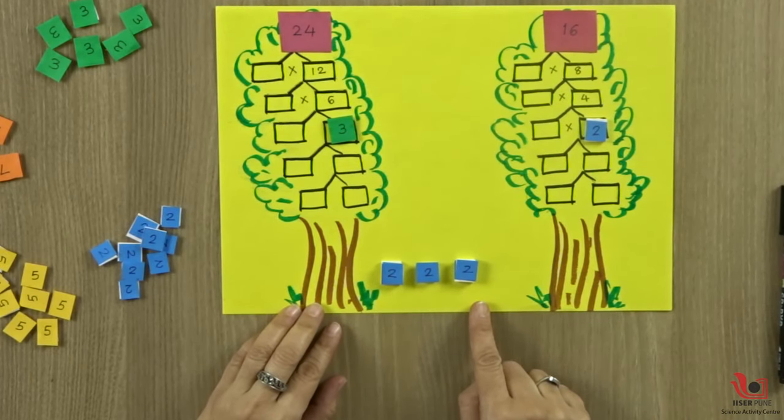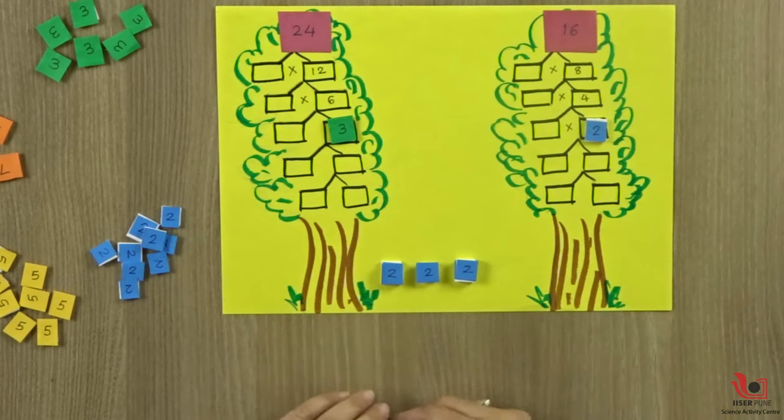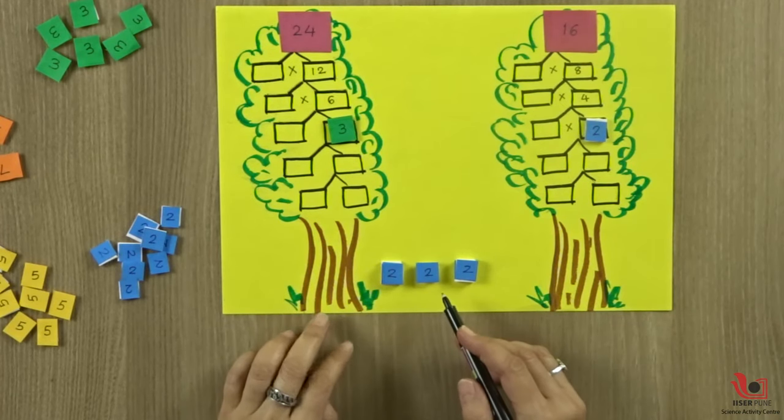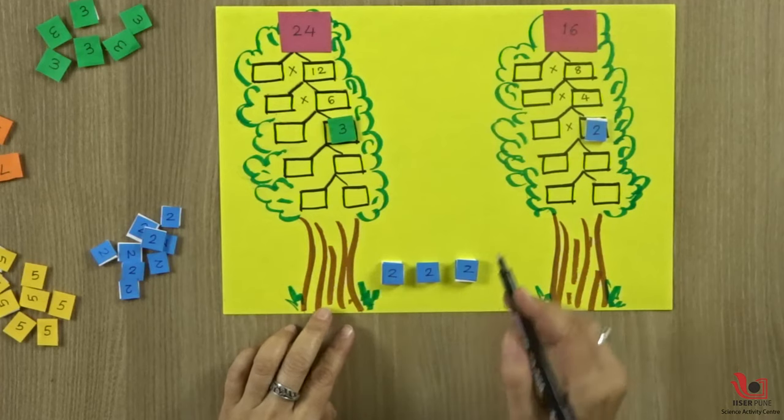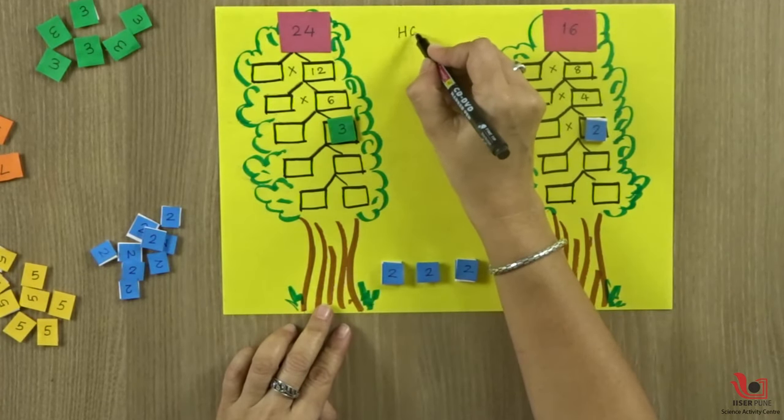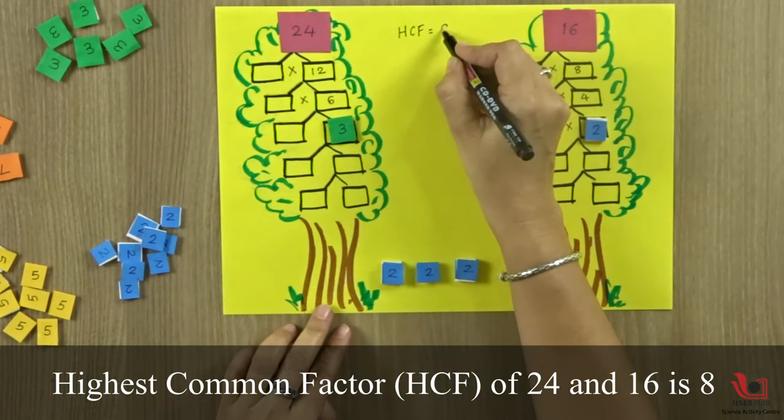But we want the highest common factor, so we need to take the product of this. 2 into 2 is 4. 4 into 2 is 8. So the HCF of 24 and 16 is 8.